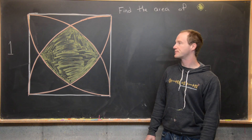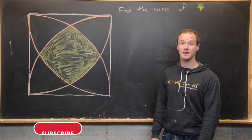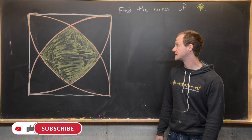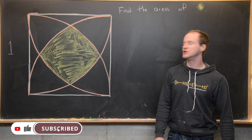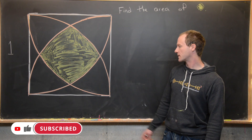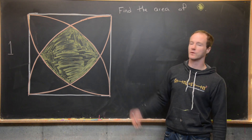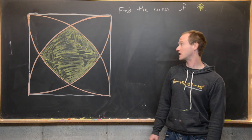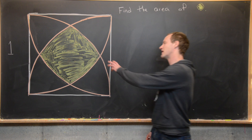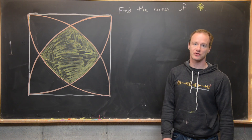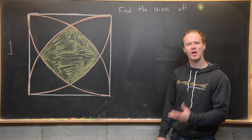Here we're going to look at a nice geometry problem which we will solve using elementary calculus. We've got a unit square — a square with side length one — and four quarter circles that are inside of the square.